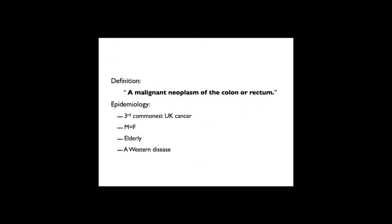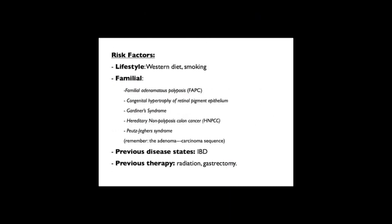The association with a Western diet and low fibre intake contributes to this. Risk factors include the Western diet and smoking, as with all cancers. There are also familial associations - lots of syndromes with polyps. The most important is familial adenomatous polyposis, where adenomatous polyps go on to become carcinoma through the adenoma-carcinoma sequence. Other syndromes mentioned include Gardner's and Peutz-Jeghers syndrome.